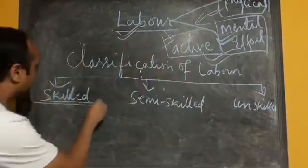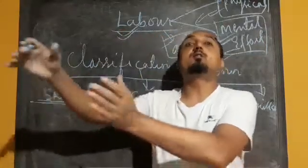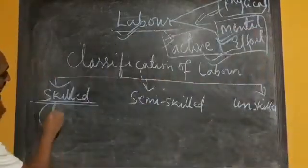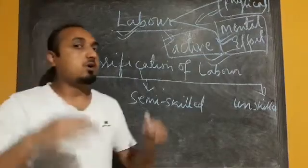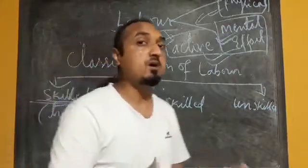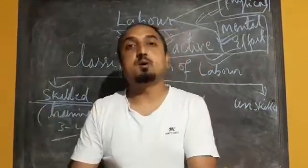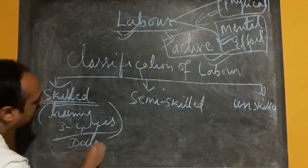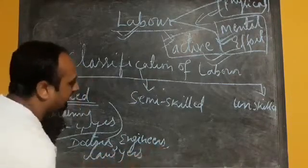Skilled labor are those who have gone for a long period of training — at least three to four years. Workers who have gone for a long period of training are called skilled labor. Examples are doctors, engineers, lawyers, and even teachers — they all are examples of skilled labor because they have gone for training for at least three to four years.